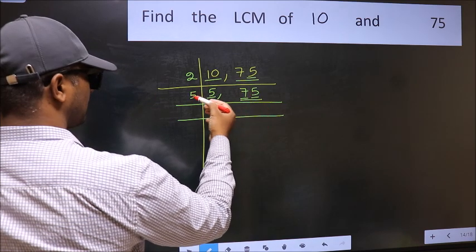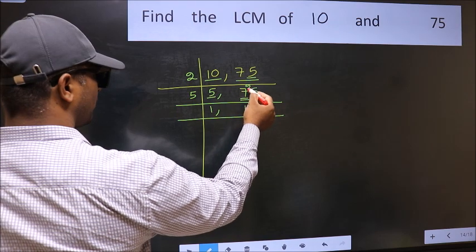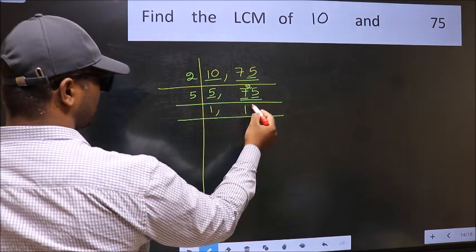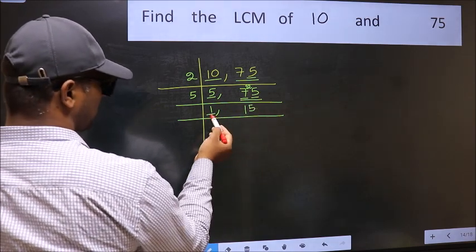A number close to 7 in the 5 table is 5 once is 5. 7 minus 5 is 2. 2 carried forward, 25. When do we get 25 in the 5 table? 5 fives is 25.